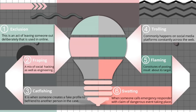The next type of cyberbullying is flaming. This constitutes posting about or directly sending insults and profanity to a target. Flaming is similar to trolling but is usually a more direct attack on a victim to incite them into online fights. Another type is swatting. Swatting is when someone calls emergency responders with claims of dangerous events taking place at an address, with the intention of causing panic and fear when armed response units arrive. Swatting is more prevalent within the online gaming community.